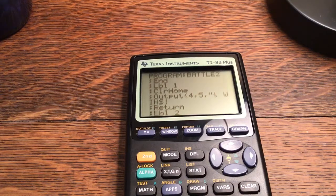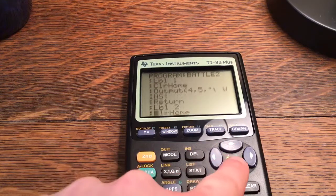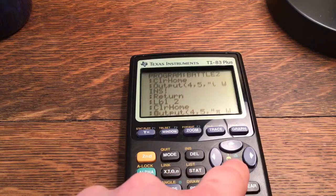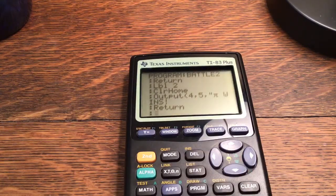And then label 2. Clear home. And then output 4, comma, 5, comma, pi wins. Return. And that's the end of the program.